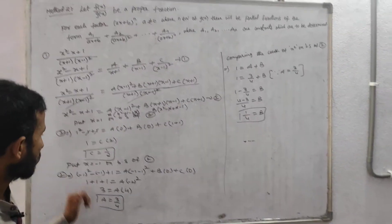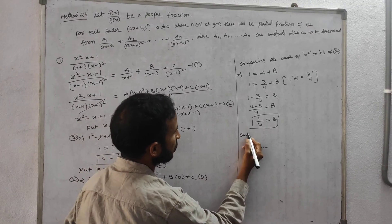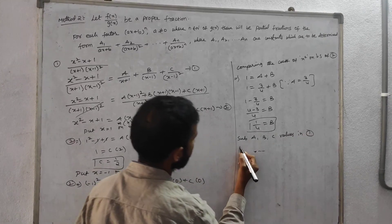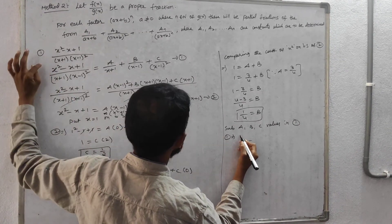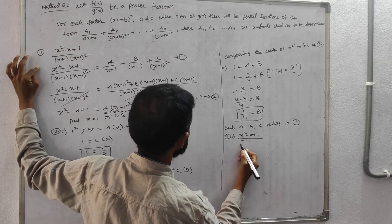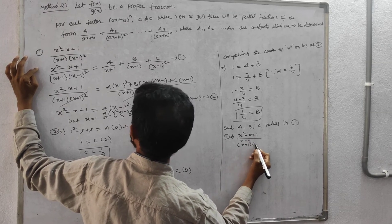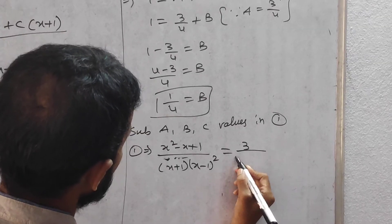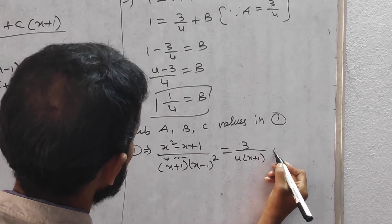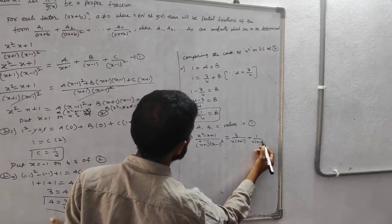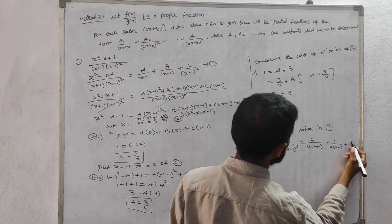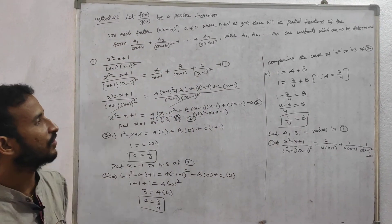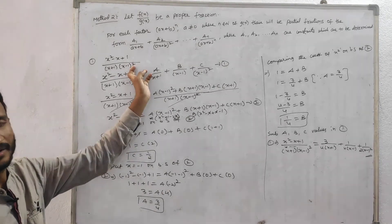Now we have all values: A = 3/4, B = 1/4, C = 1/2. Substituting into equation 1: (x² - x + 1) / [(x+1)(x-1)²] = (3/4)/(x+1) + (1/4)/(x-1) + (1/2)/(x-1)². This is the method to follow when we have repeated linear factors.